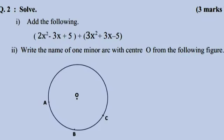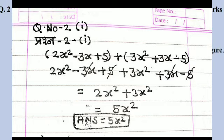Now we are going to solve Question number 2. First, add the following: in the first bracket, 2x squared minus 3x plus 5, plus in the second bracket, 3x squared plus 3x minus 5. We write it as: 2x squared minus 3x plus 5 plus 3x squared plus 3x minus 5. Combining like terms: 2x squared plus 3x squared gives 5x squared.